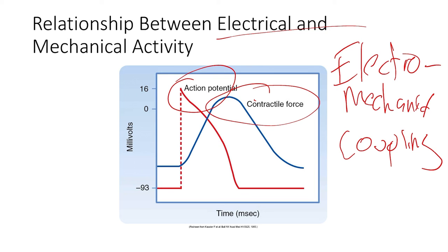Think of the conduction system as the computer system that controls the heart — if there are problems with the computer, there are going to be problems with the machinery. So that is the cardiac conduction cycle. Know the net direction and key ions that are moving between phase four through zero, one, two, three, and back to four. With that, I will end here and we'll move on to our next section.